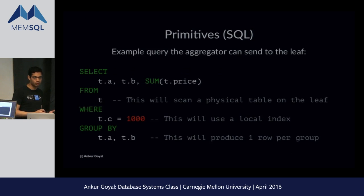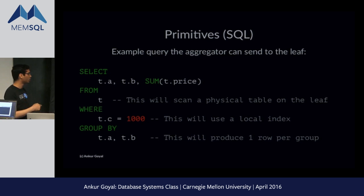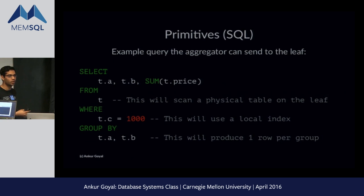Here's an example query: SELECT t.a, t.b, SUM(t.price) FROM t. This t refers to the local physical table on the leaf. If there's an index on c, you'll be able to use a local index to seek. The traffic you send back to the aggregator is one row per group, not one row per row in t. A lot of systems don't push down anything — they pull all of t to a coordinator node. Fewer systems push down filters, and even fewer push down groups. The fact that we can push down full SQL gives us a lot of flexibility in what computations we push to leaves versus reserve for the aggregator.